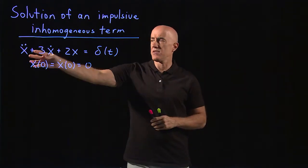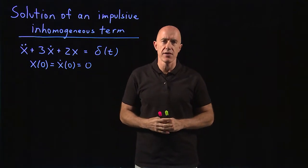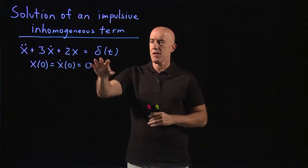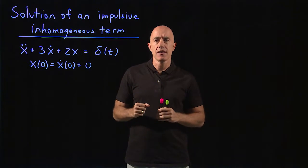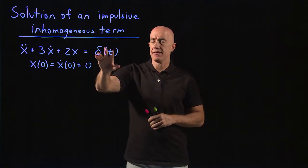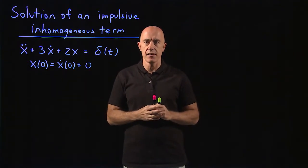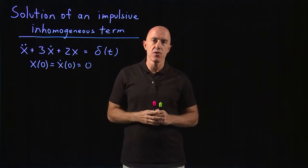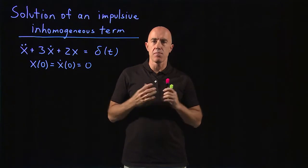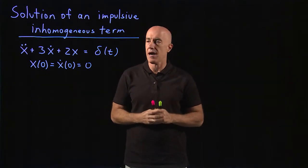So physically, if this was say a mass on a spring or a pendulum, you would have a hammer hitting the mass at t equals zero. The mass is initially at rest with zero velocity. And the impulsive force will then impart some momentum to the object.